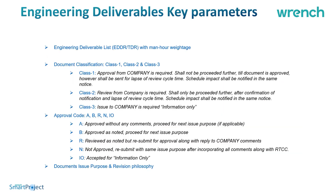These deliverables can be categorized by type — required for approval, required for review, or for information. You can pre-define the approval status codes based on your clients or internal process, and you can specify the revision philosophy and revision series such as A, B, C, D, 1, 2, 3, 4, or R1, R2, R3.